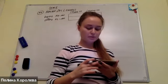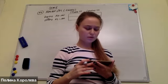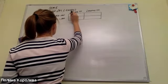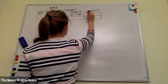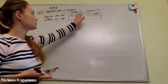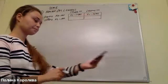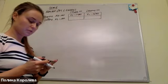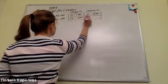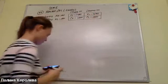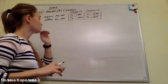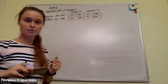Buyers value plums at 2,400 and lemons at 1,600. This is the maximal willingness to pay for these two types of cars. Sellers are ready to part with their good or bad cars at a price: plums at 2,000, lemons at 1,000. This is the minimal price for which sellers are ready to sell. Suppose everything is common knowledge.